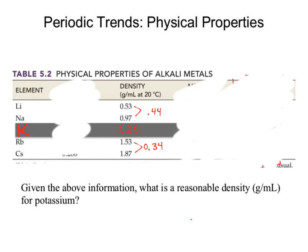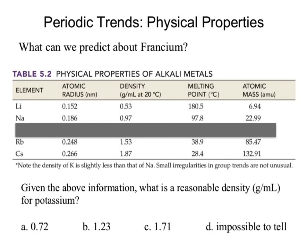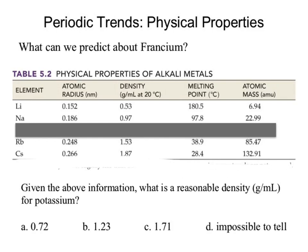You use the data to come to an analysis. How could I ask a test question? Given the above information, what is a reasonable density for potassium? The answer is 1.23, which is choice B — close to our estimate of 1.25. What about 0.72? No, way too low. 0.71? No, too high. Impossible to tell? No — I can draw conclusions. Our answer is B. I don't care that it's not the exact correct answer; what I care about is the logic and thought process behind following that pattern.